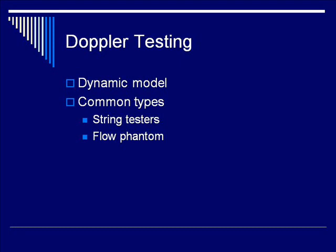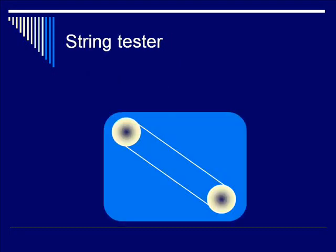There are two common types of Doppler test objects. String testers, which basically involve putting a string on a pulley and connecting it to a motor, and flow phantoms, which are more complicated and involve pumping fluid through a tube placed within ultrasound phantom gel.